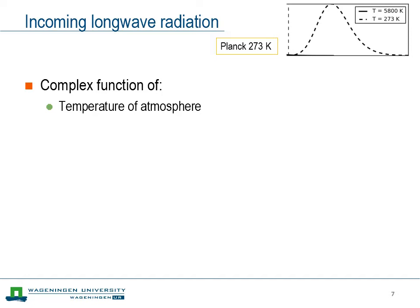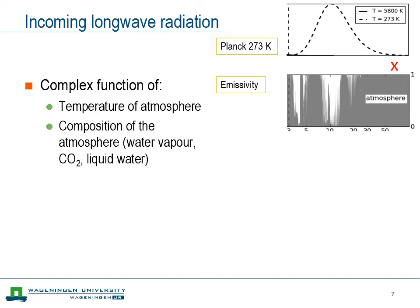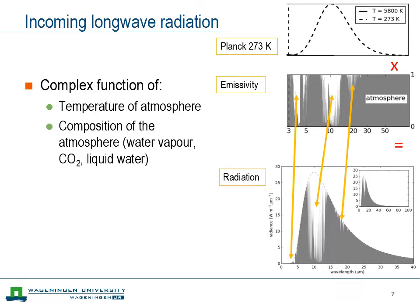To summarize: the incoming longwave radiation is a complex function of the atmosphere's temperature — the Planck curve we know well — but the complexity comes from the emissivity, which is a strong function of atmospheric composition and wavelength. If you look at the spectral composition of radiation arriving at the Earth's surface, it looks like a Planck curve but with a large gap in the middle, which we call the atmospheric window. The tails on both sides are quite well filled.